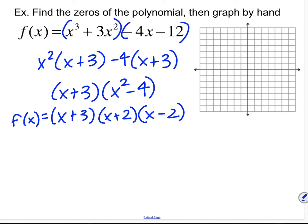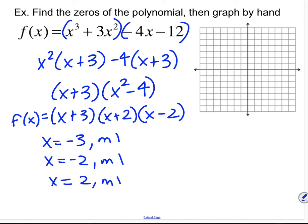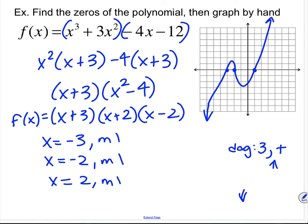The zeros are x equals negative 3 with multiplicity 1, x equals negative 2 with multiplicity 1, and x equals positive 2 with multiplicity 1 — all straight through, no inflection or bounce. The degree is 3 and the leading coefficient is positive, so the end behavior is increasing (down-left to up-right). Plotting the zeros at negative 3, negative 2, and positive 2, the graph comes up, straight through all three, and up to the right.